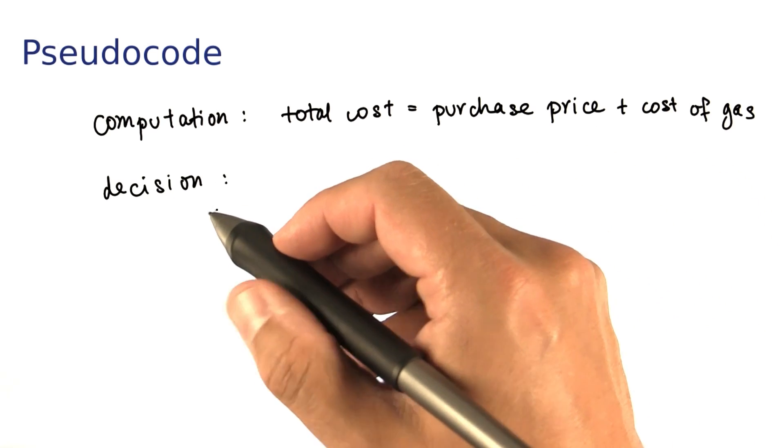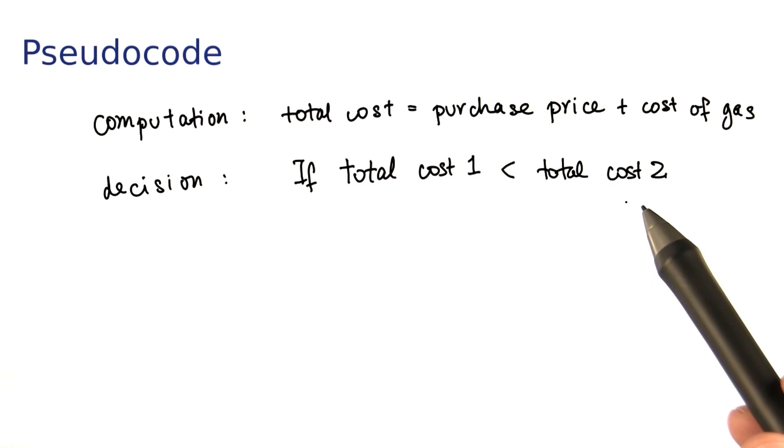You might want to have a decision: if the total cost 1 is less than the total cost 2, do one thing, else do another thing.